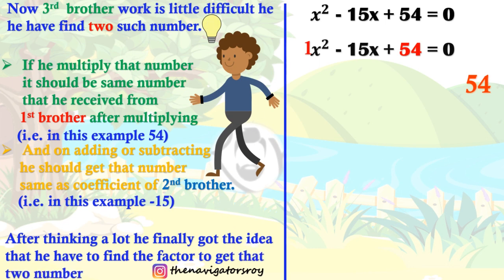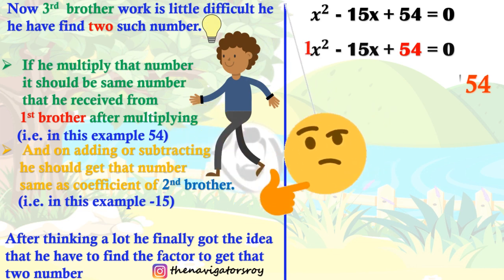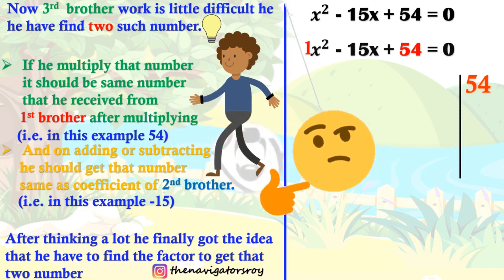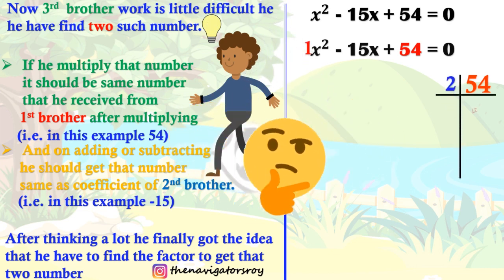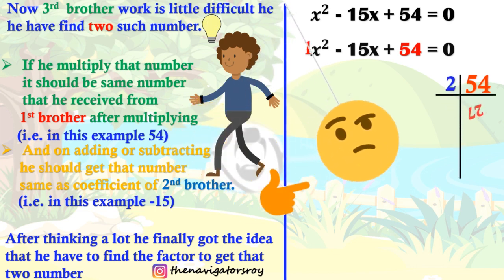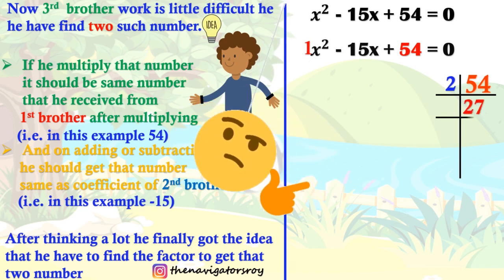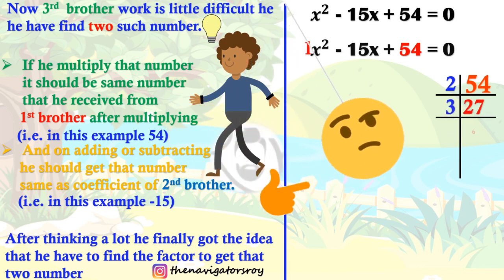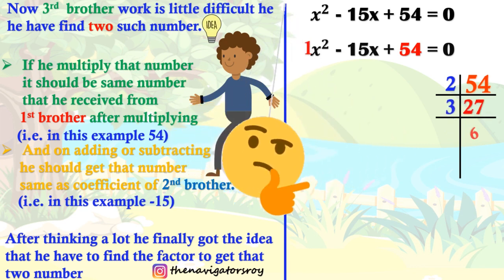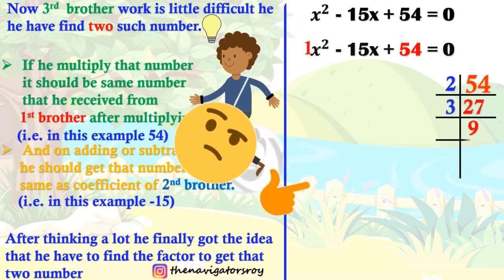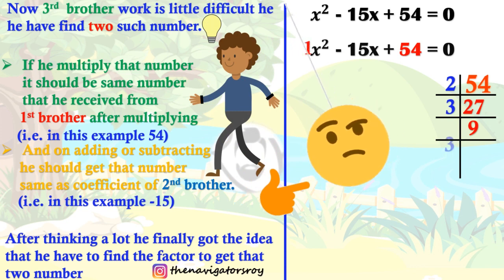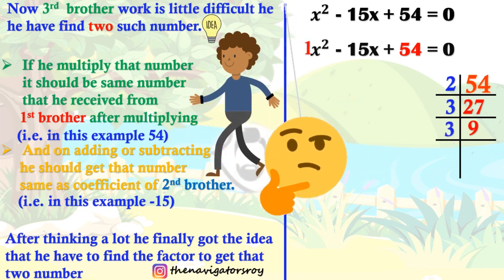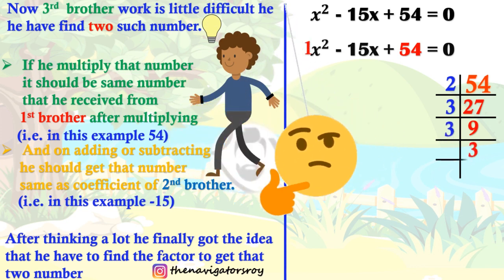You can find the factors. 27 times 2 is 54. 9 times 3 is 27. Then 3 times 3 is 9. And 3 times 1 is 3.